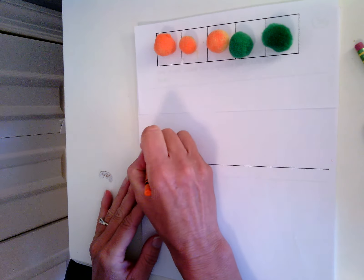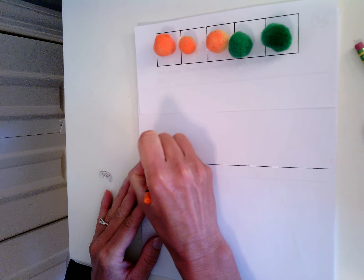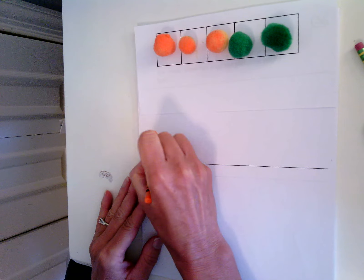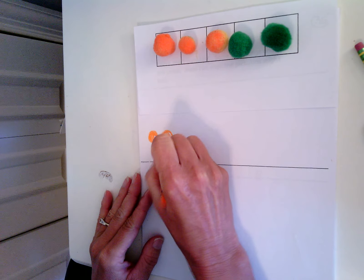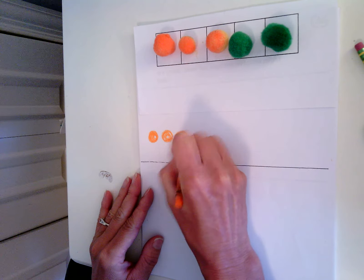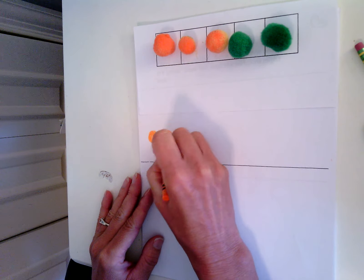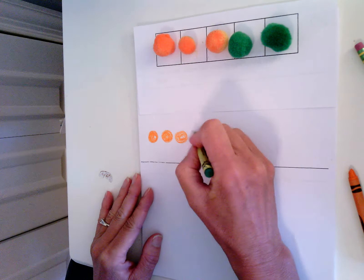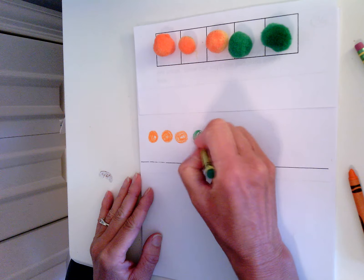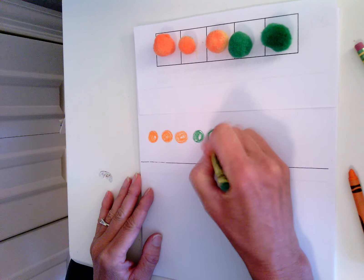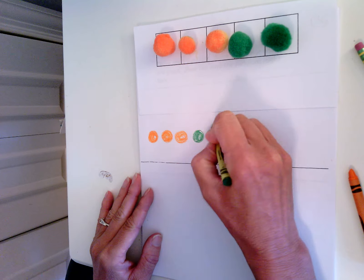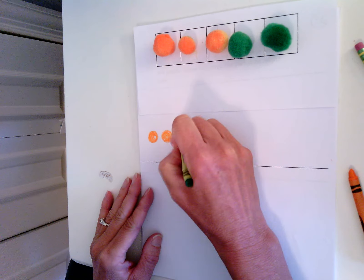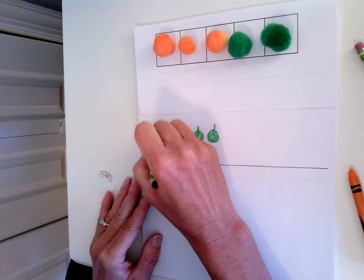So I'm going to first draw the pumpkins. I already have three oranges. Three of the pumpkins are orange. And two of the pumpkins are green. If I wanted to make them look like pumpkins, I could put a little stem on them.